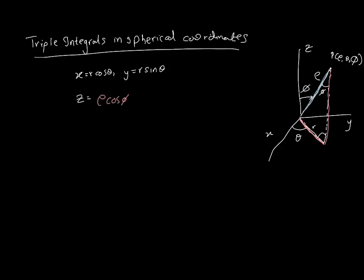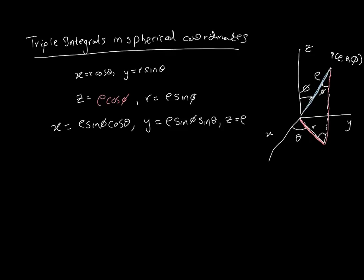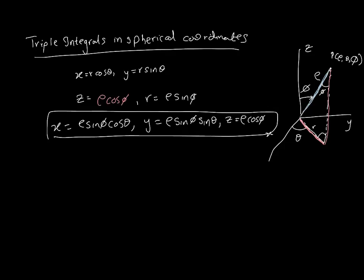Looking at r, phi, and the right angle, r can be written as ρ sinφ. So we can revise our coordinates: we don't need r anymore because it's replaced by ρ sinφ. Therefore x = ρ sinφ cosθ, y = ρ sinφ sinθ, and z = ρ cosφ. These constitute our spherical coordinates.